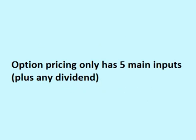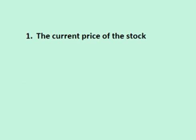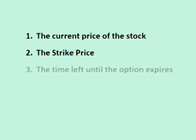There are only 5 inputs to the price of an option, or 6 if the stock pays a dividend. The first input is the current price of the stock. The second input is the strike price, which is the preset buy or sell price that you are locking in.